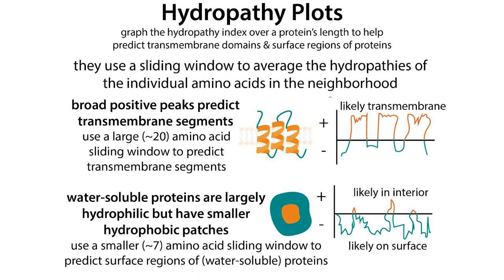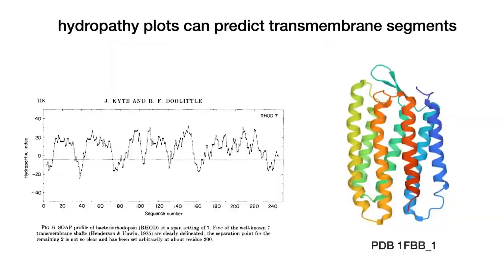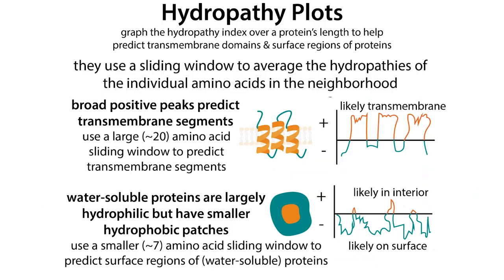If we want to predict a transmembrane segment - a part that actually goes through the membrane - we want to take a big window of about 19 to 21 amino acids. This is because that's about the number of amino acids for an alpha helix to pass through the membrane, and alpha helices are one of the key ways membrane proteins pass through. With a window of about that size, we can predict transmembrane segments, represented by broad stretches with a positive hydropathy index, indicating hydrophobic regions. You'll likely also see some hydrophilic segments bridging the helices.